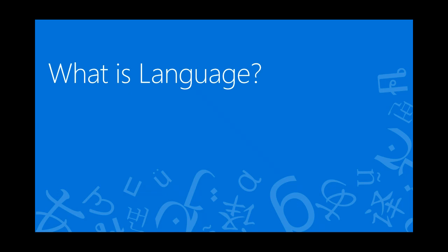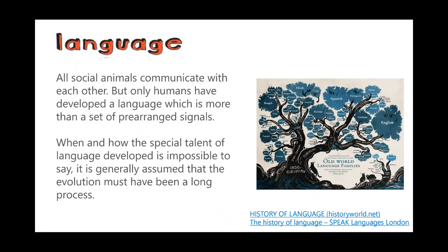All of us communicate every day, but when someone asks you what is language, it's hard to define. All social animals — bees, whales, dogs, cats — communicate with one another. But interestingly, only humans have developed a language which is more than just a set of clear range signals. When and how this special talent of language developed among human beings is impossible to say, and it's generally assumed that this was a long process of evolution.